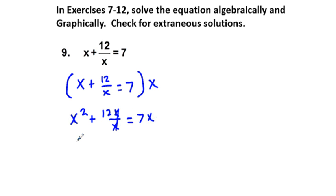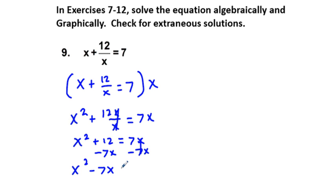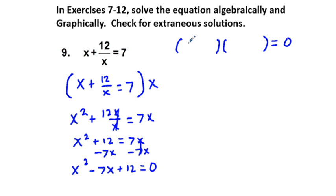We cancel x over x, and we get x squared plus 12 is equal to 7x. We're going to subtract 7x from both sides of this equation, giving us x squared minus 7x plus 12 is equal to 0. The factoring is similar to what we did before. If factoring did not work, we could use the quadratic formula. We have x and x as the factors of x squared, and we're looking for two numbers which when multiplied together equal 12 but when added together equal negative 7.